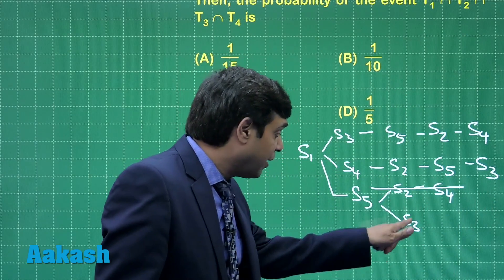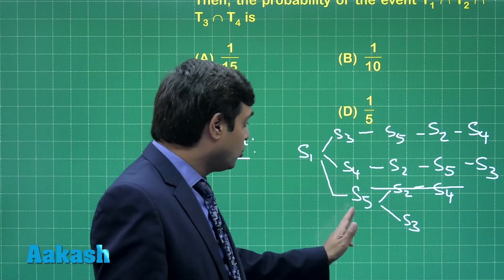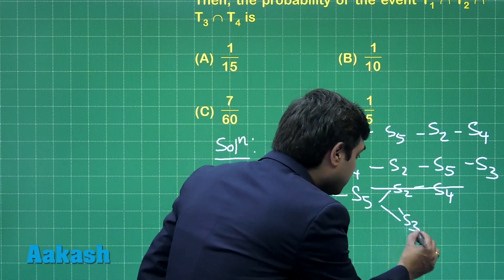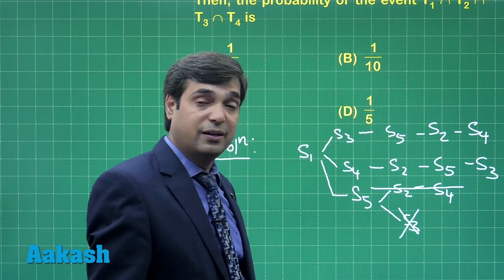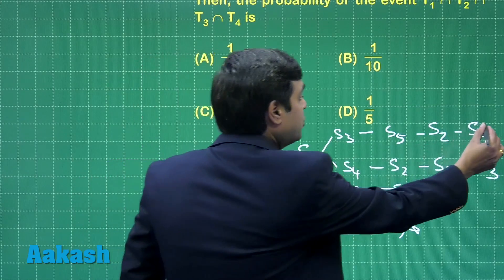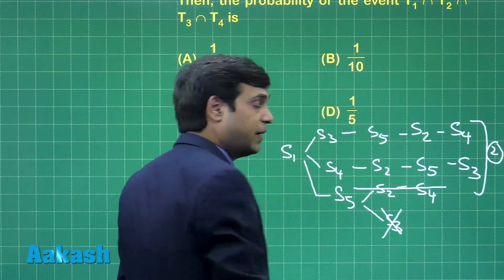Similarly, when we go for S3 we are left with 2 and 4 and both not possible with it. So again the case is cancelled. So we observe just 2 possibilities with starting with S1.